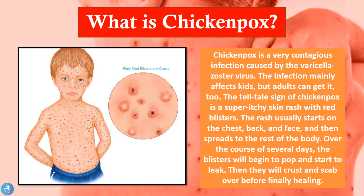The infection mainly affects kids but adults can get it too. The telltale sign of chicken pox is a super itchy skin rash with red blisters which are found sporadically all around the body. The rash usually starts on the chest, back and face and then spreads to the rest of the body.